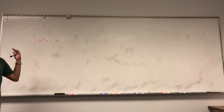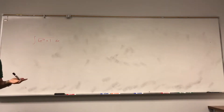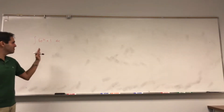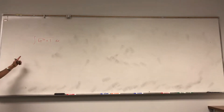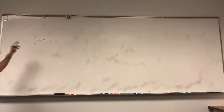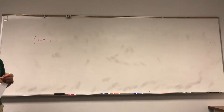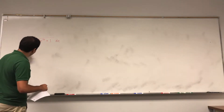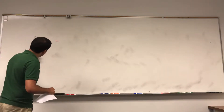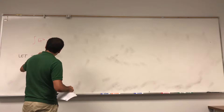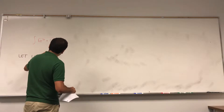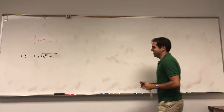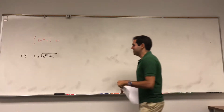Now, the thing that's sort of awesome — I want to use a substitution, and as I said, it never works, but it works here. Namely, how about we just substitute the whole function? Why not? So let u be square root of e to the 2x plus 1, and substitute all the things. Let's see what happens.